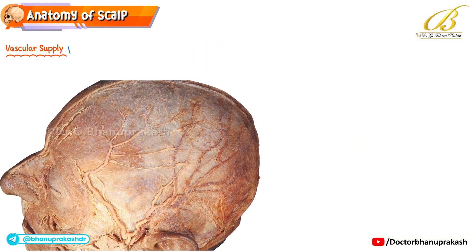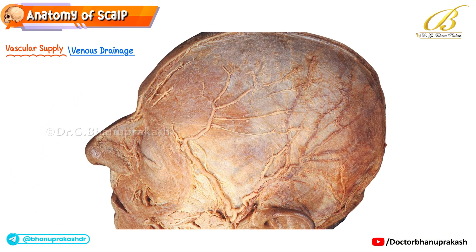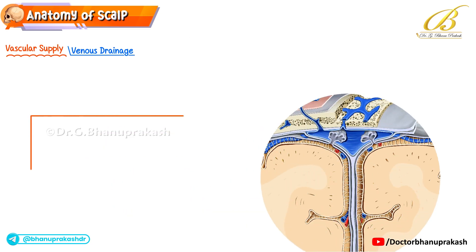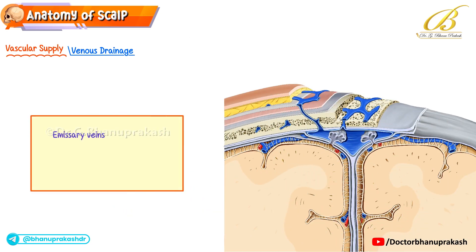The veins of the scalp closely accompany their corresponding arteries, draining into superficial venous networks. The key clinical point is that these veins also connect with emissary veins, which pass through the skull and communicate directly with the intracranial dural venous sinuses. This creates a potential pathway for infection to spread from the scalp into the cranium, making venous anatomy just as important as the arterial supply.